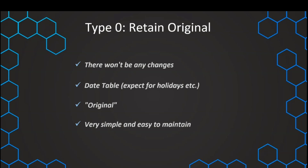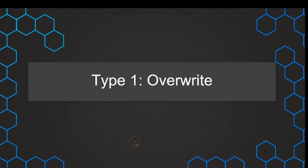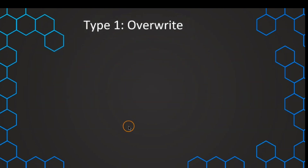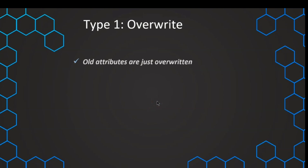We want to see that type in the next lecture. In the real world, many attributes in our dimensions are subject to changes, and we also want these changes to be reflected in our dimension so that users can really see the updated and real new values. That brings us to the first type: the override slowly changing dimension. In that case, we just update the old attributes and basically override them with the new values.